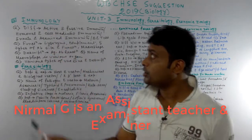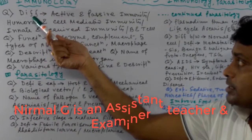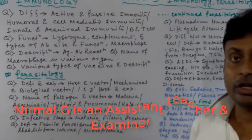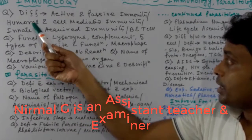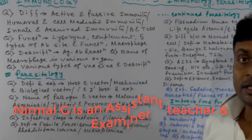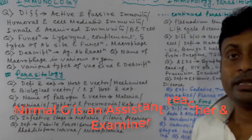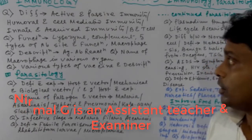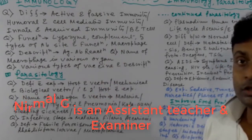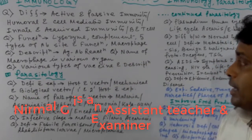First, Immunology. The difference between active and passive immunity. This is Humoral and Cell-mediated Immunity — also called Rasvittic and Koshvittic. Innate and Acquired Immunity. B cells and T cells.